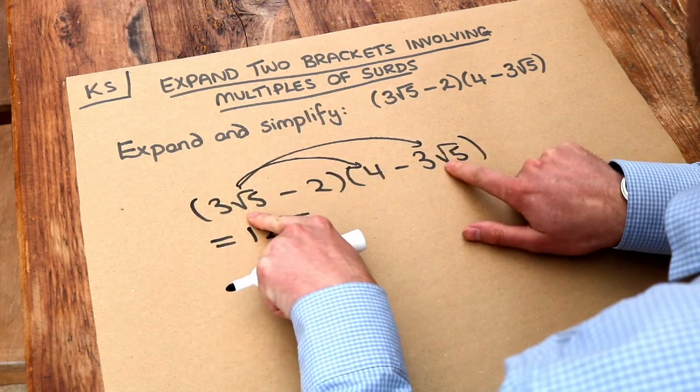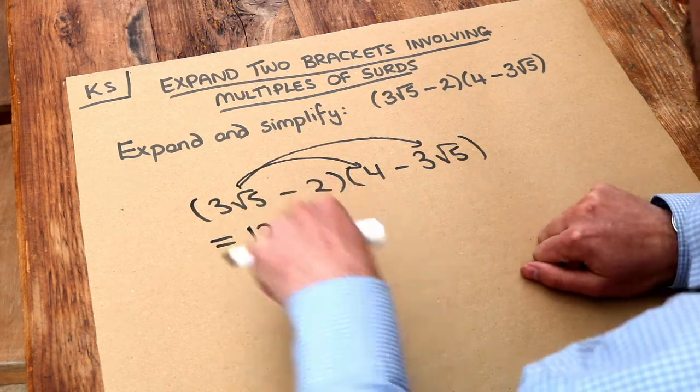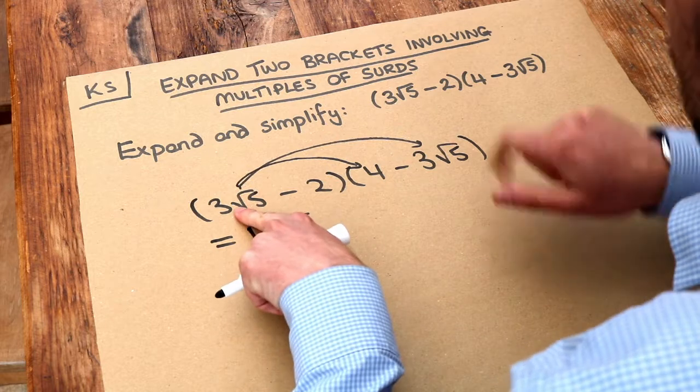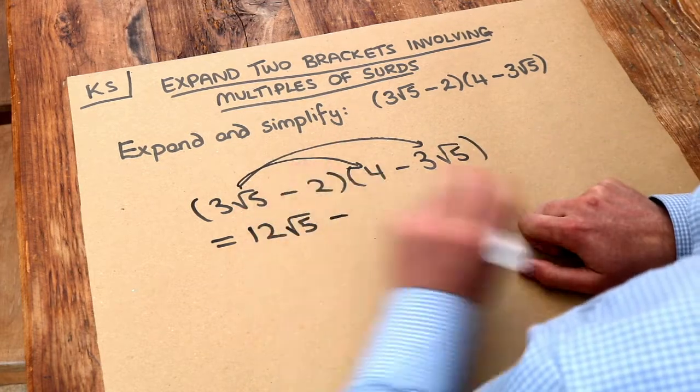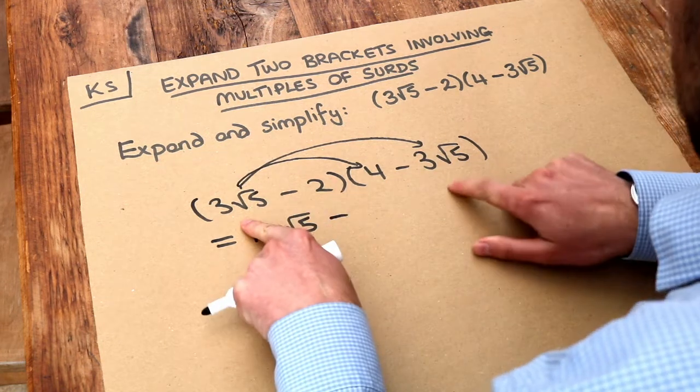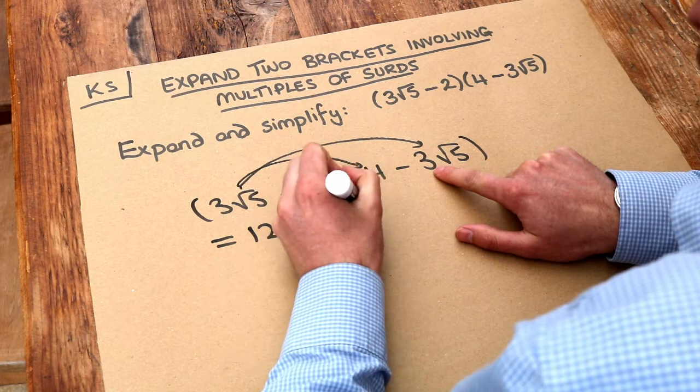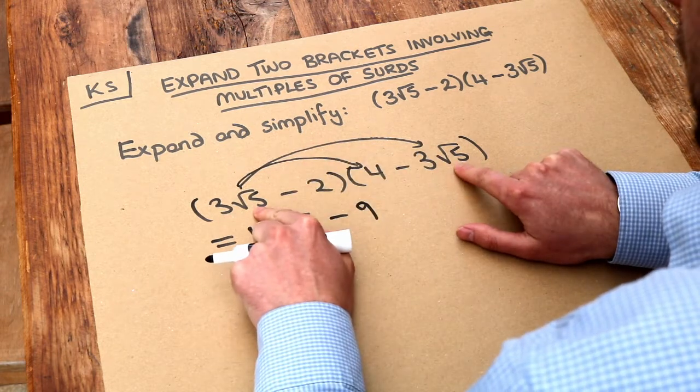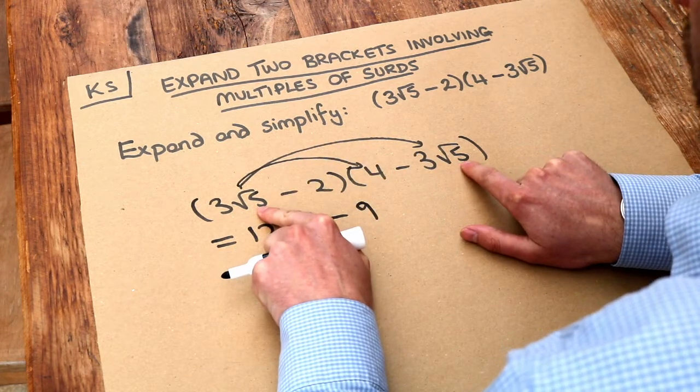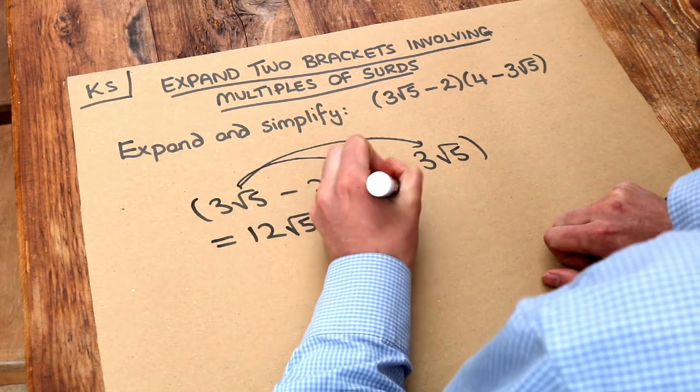Then we do the three root five times the negative three root five. This is the hardest bit of the question, I reckon. Now firstly, get the sign right: positive times negative is negative, so we don't have to worry about whether it's plus or minus anymore. And then we times the non-surds together first. Three times three is nine. And then we times the surds together. Root five times root five is root twenty-five. And in fact, I'm just going to leave it as root twenty-five for the moment. We can simplify that on the next line.